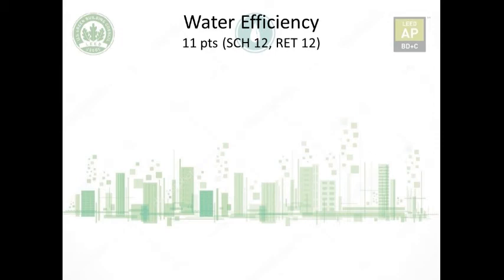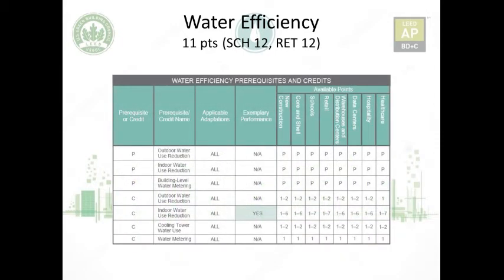Water Efficiency: 11 points for all adaptations; for school and retail, 12 points. LEED focuses on water efficiency because every day clean water is required for drinking, food production, and energy generation. According to the U.S. Geological Survey, 355 billion gallons of fresh water was withdrawn each day in the United States in 2010 for various uses, including power generation, agriculture, and public use. The water efficiency category focuses on conservation of potable water for indoor and outdoor use, as well as non-potable and alternative water resources for LEED projects.